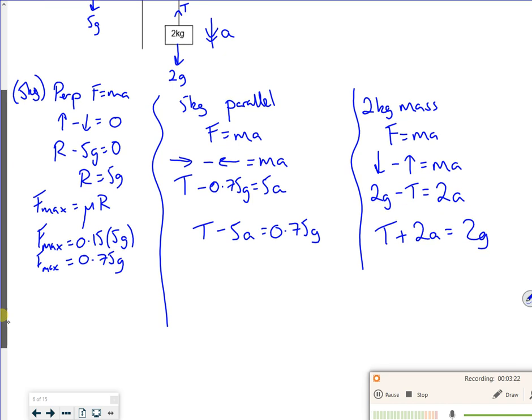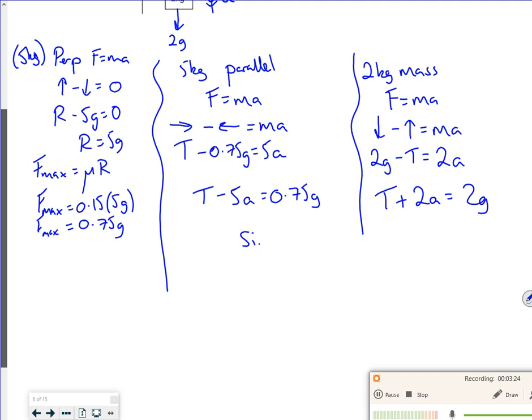If you solve them simultaneously, so 1 minus 5 and 0.75 times 9.81, and then 1, 2 and 2 times 9.81, it gives me a tension of 16.1 newtons to 3 sig fig, and an acceleration of 1.75 meters per second squared to 3 sig fig. Job done.